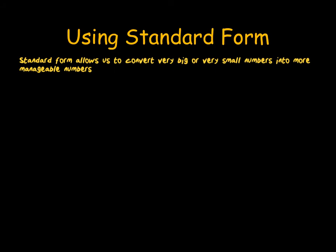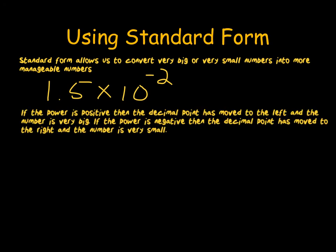Because microscopes allow us to see microscopic objects, it can be helpful to use standard form. This is where we change very big or small numbers with lots of zeros in them into something a lot more manageable. For example, 0.015 can be written as 1.5 times 10 to the minus 2. To do this, we just need to move the decimal point to the left or the right. The number of places that we move the decimal point by, we represent by the power of 10. If it's positive, the decimal point's moved to the left, which means it's a very large number. Whereas if this power is negative, the decimal point has moved to the right, and therefore it is a very small number.